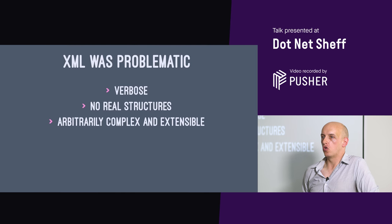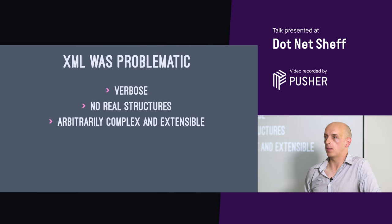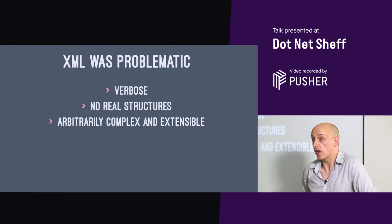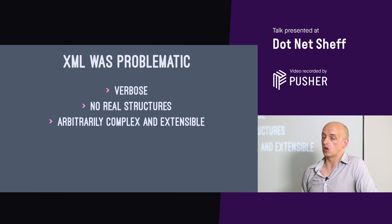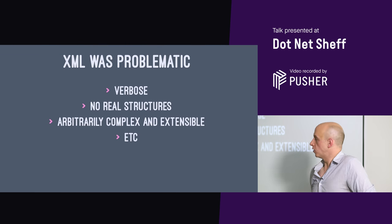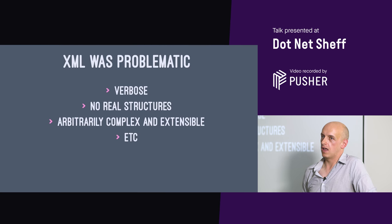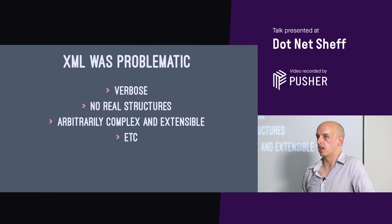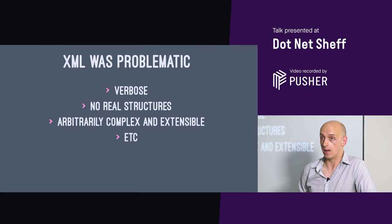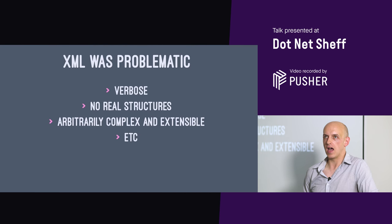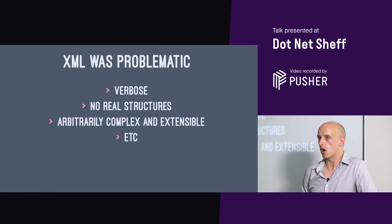XML was better than the proprietary formats that came before — it gave us Unicode as a basic thing, a parsable structure everyone standardized on: tags, links, XSD, all that sort of stuff. Way better than what came before. But we had to move on because there were other problems — too complex, vendor lock-in with things like SOAP. That's why we got to JSON. JSON has problems. So how do we get the benefits we want?